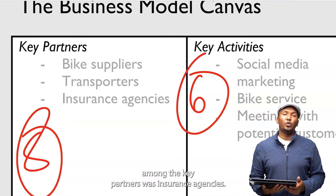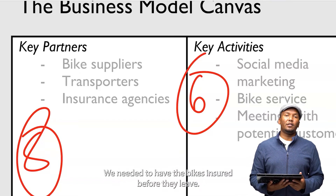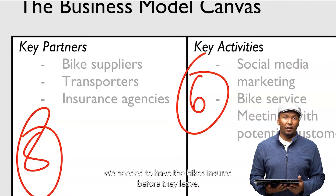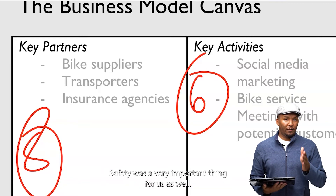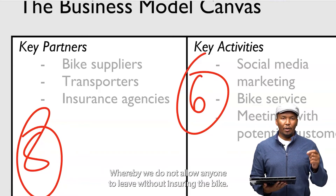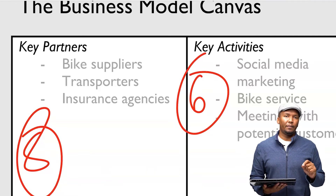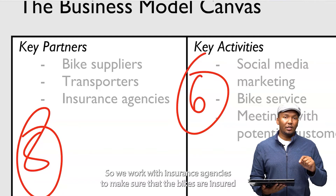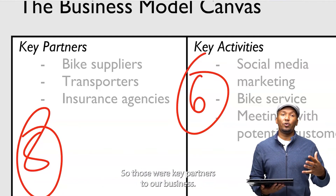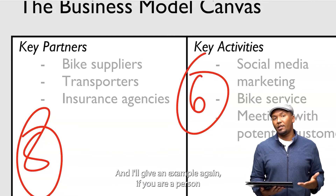Finally, among our key partners were insurance agencies. We needed to have the bikes insured. Safety was very important for us when starting — we did not allow anyone to leave without insuring the bike. So we used to work with insurance agencies to make sure the bikes were insured before they left. Those were key partners to our business.